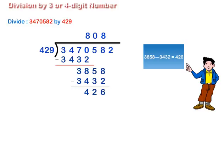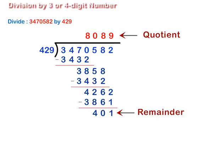Following the same steps, we get quotient equal to 8089, remainder equal to 401.